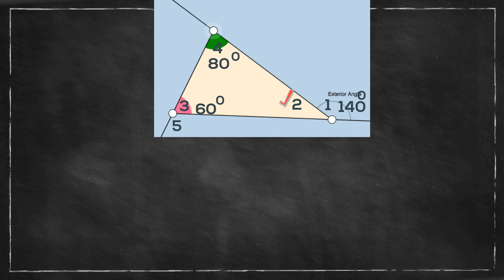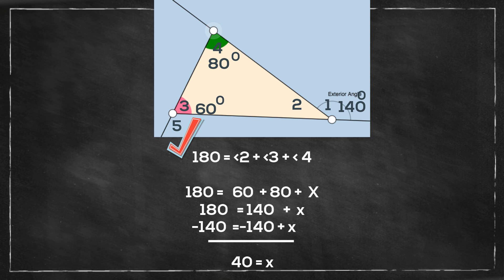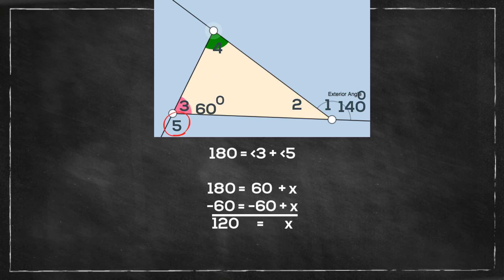Now let's find angle measure 2. There's a couple ways we could find the measure of angle 2. But let's use the fact that the interior angle measure of a triangle equals 180 degrees. So 180 degrees is equal to angle 2 plus 3 plus 4. I can fill in the numbers that we already have for angles 3 and 4. So 180 is equal to 60 plus 80 plus x. And then we solve for x. 180 minus 140 is equal to 40. So the angle for measure 2 is 40 degrees.